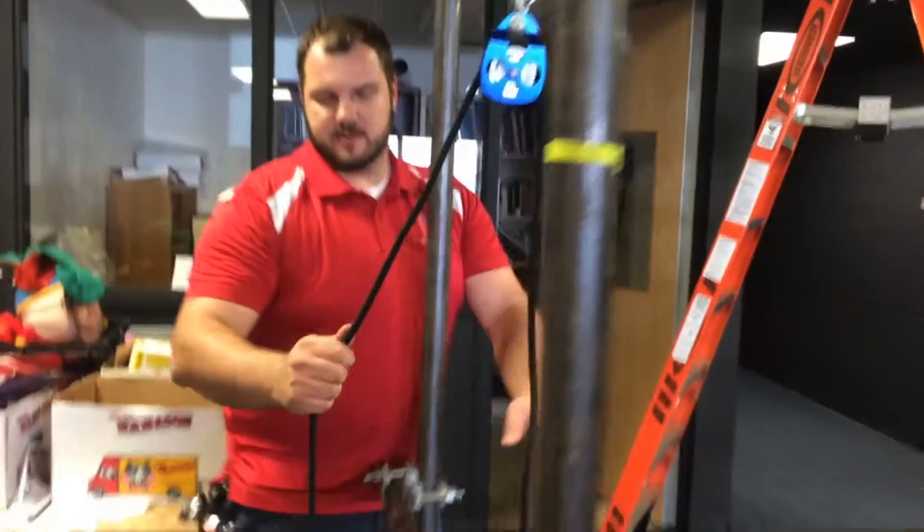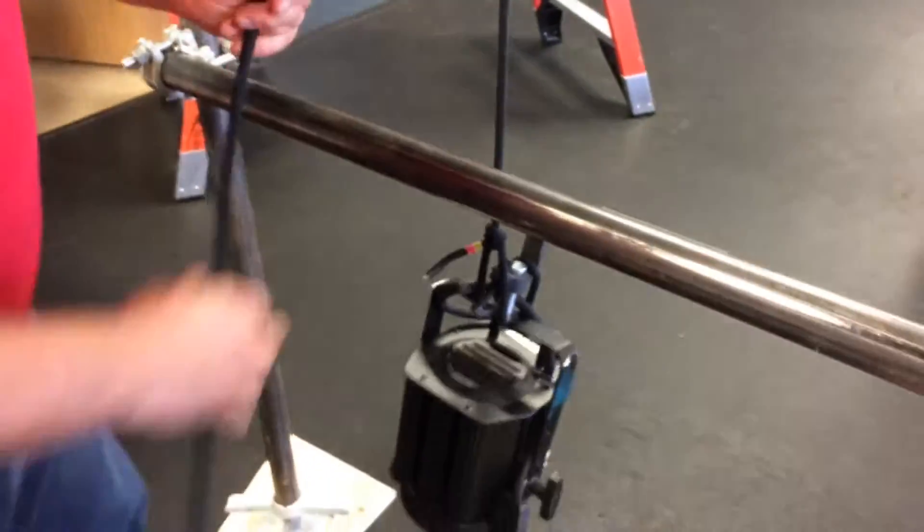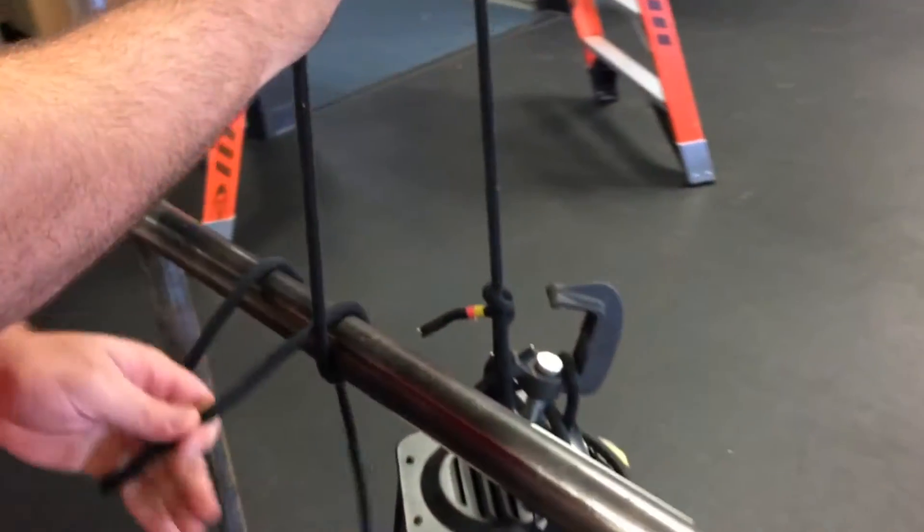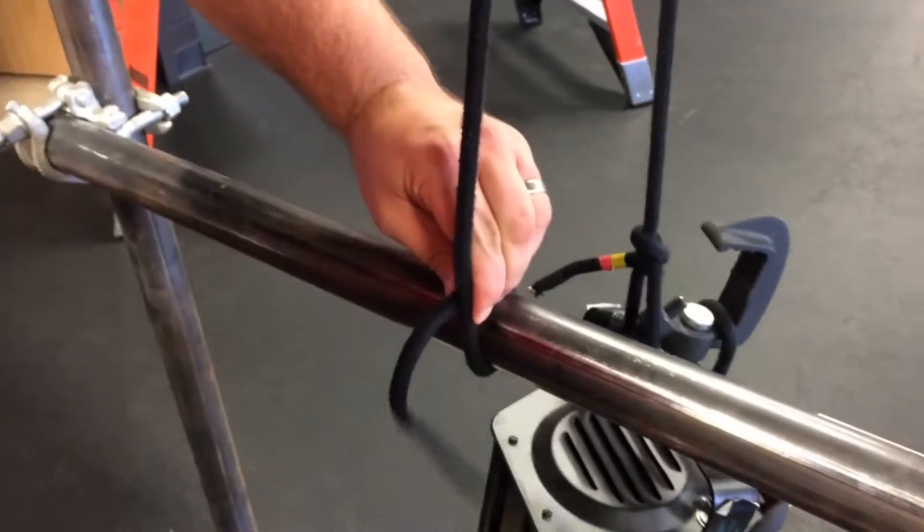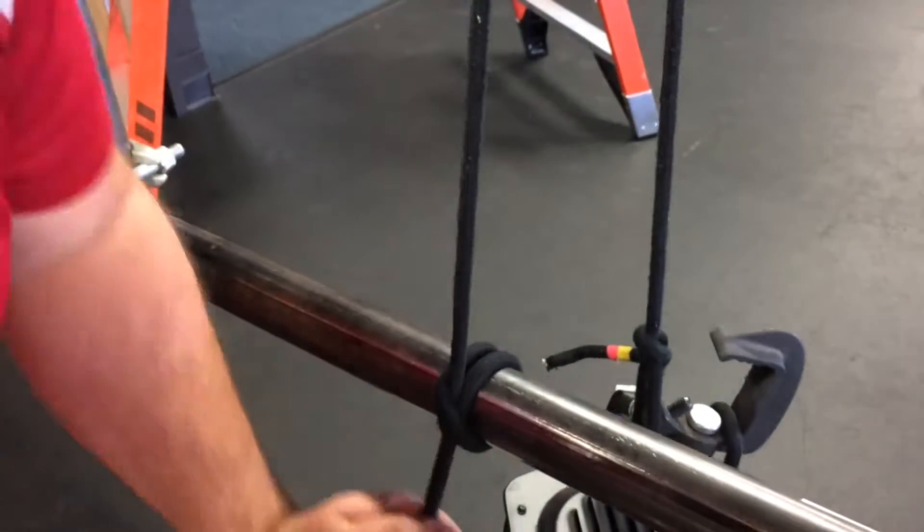We come over here and grab our opposite side of the line. We lift on the front side of the pipe, go around, up, and through.